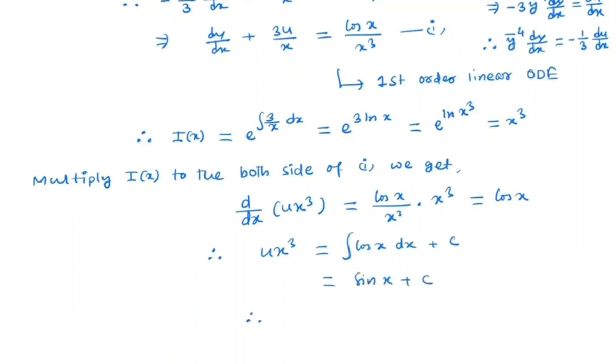So we get u is equal to x to the power minus 3 times sin x plus c. And here u is nothing but y to the power minus 3. So this is the general solution: y to the power minus 3 is equal to x to the power minus 3 times sin x plus c.